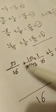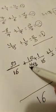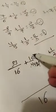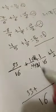33/16 plus 1/4 - multiply 4 by 4 to get 4/16. 33 plus 4.